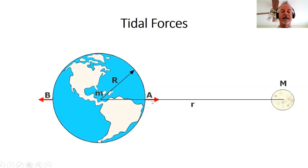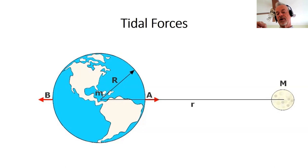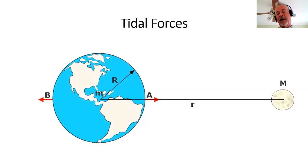The tidal force at A, being positive, points toward the Moon. The one at B, being negative, points away from the Moon. A test mass at point A would experience a small extra force to the right, and a similar mass at point B would experience a small extra force to the left. We've taken a simple case where points A and B are right on the line connecting the centers of the Earth and the Moon. In a second, we'll see how that generalizes.